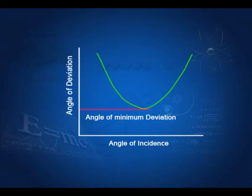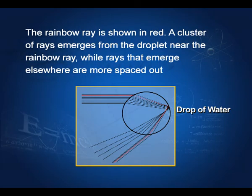If we start increasing the angle of incidence from a small value, the angle of deviation starts decreasing, reaches a minimum value, and then starts increasing again. This minimum value is called the angle of minimum deviation. One important application of this minimum angle of deviation is in the formation of the rainbow. When parallel rays from the sun are incident on a water drop, they undergo refraction and then reflection from inside the water drop. The rays are bunched near the angle of minimum deviation — these rays are called rainbow rays.